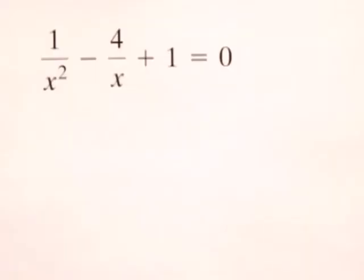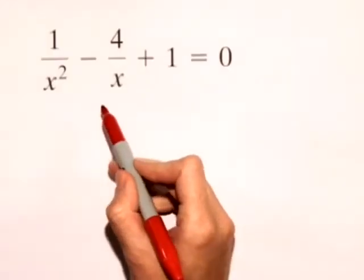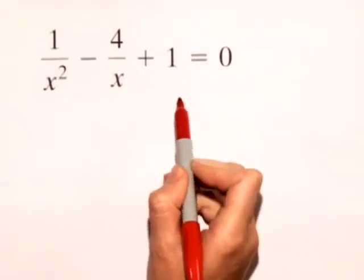Let's solve the following equation. We have 1 over x squared minus 4 over x plus 1 equals 0.